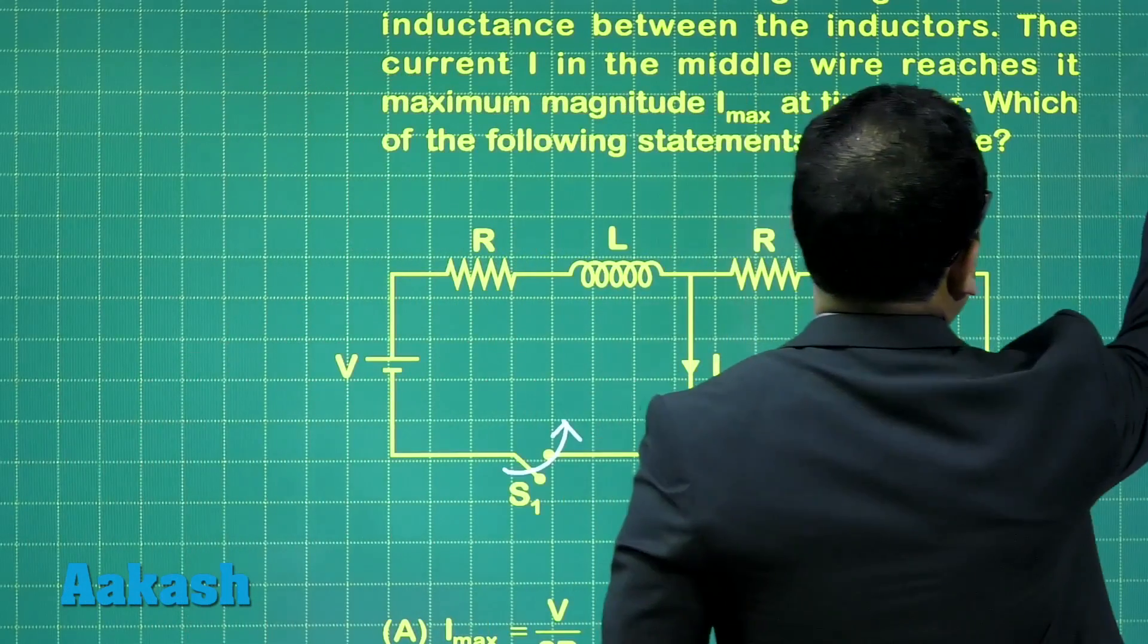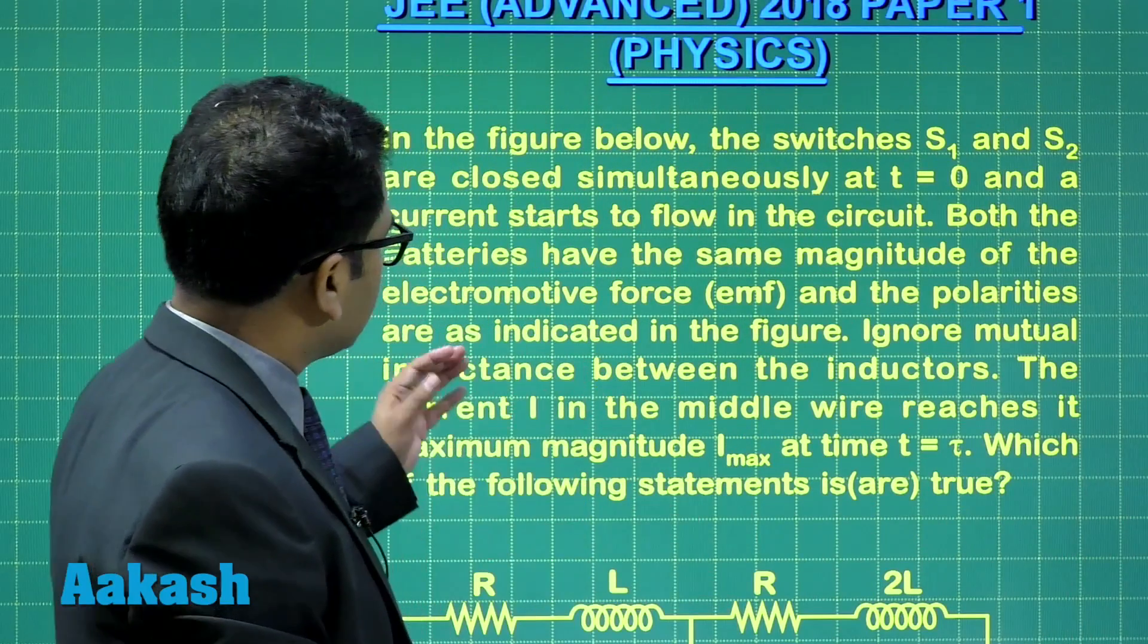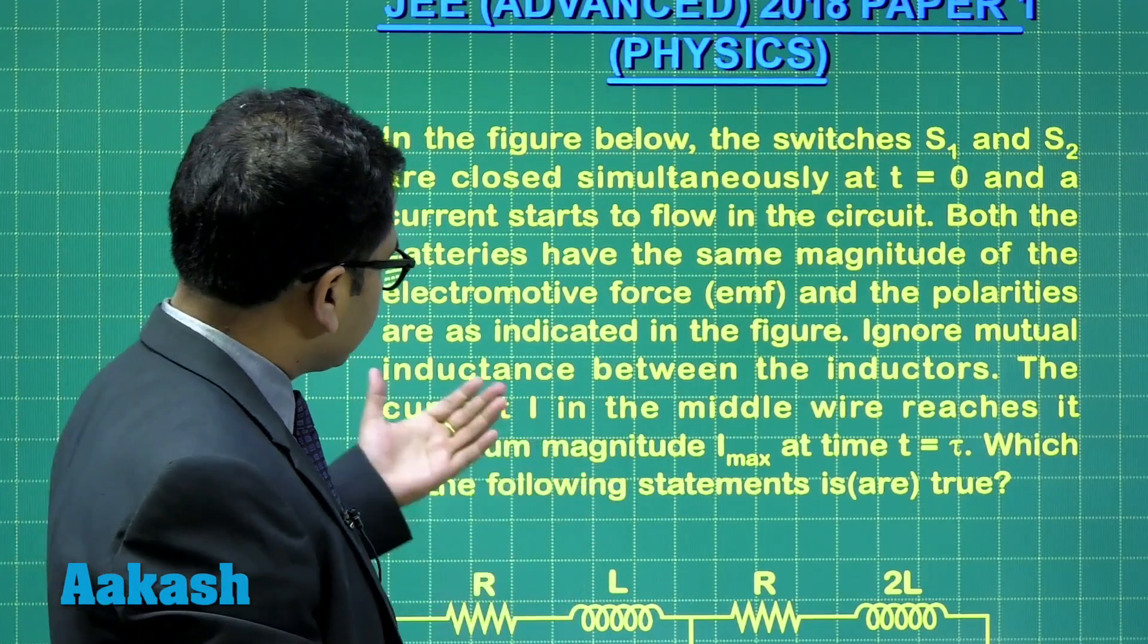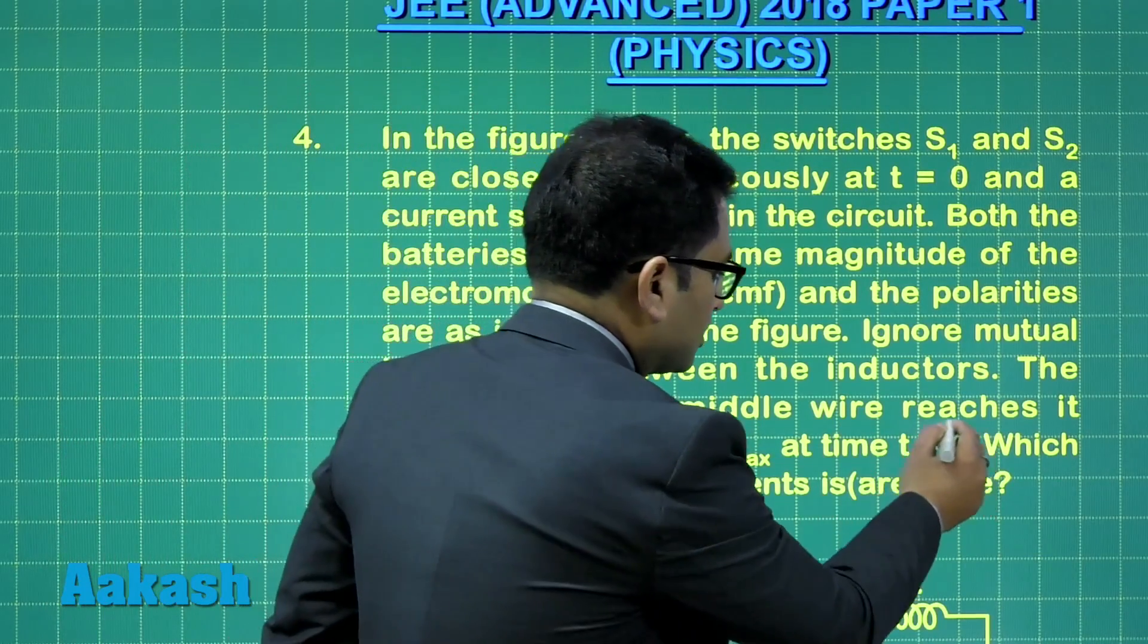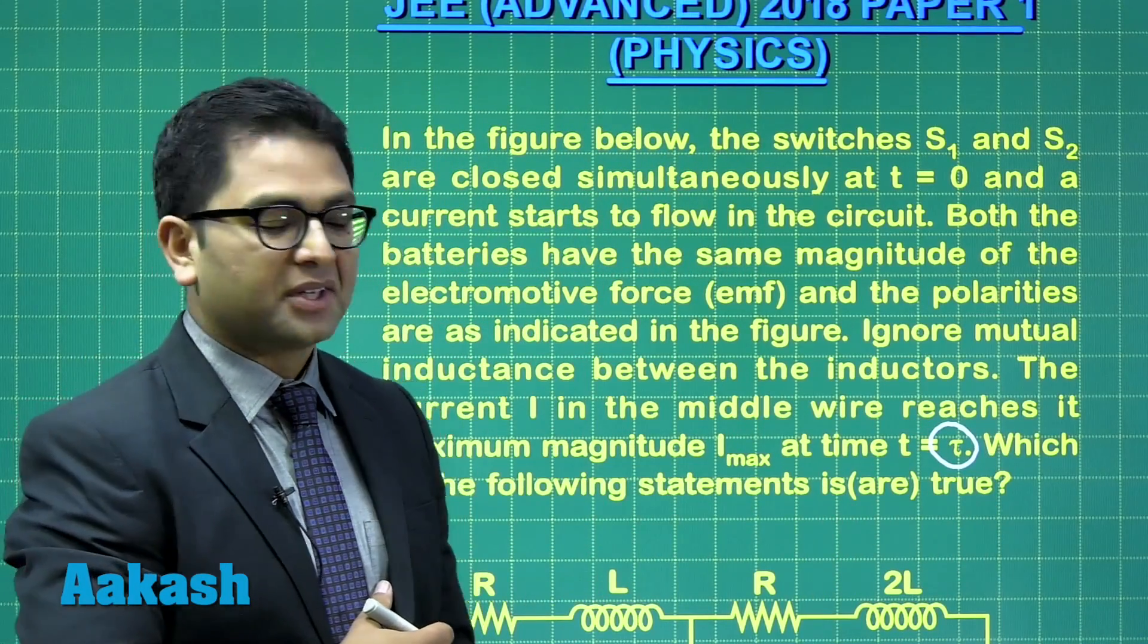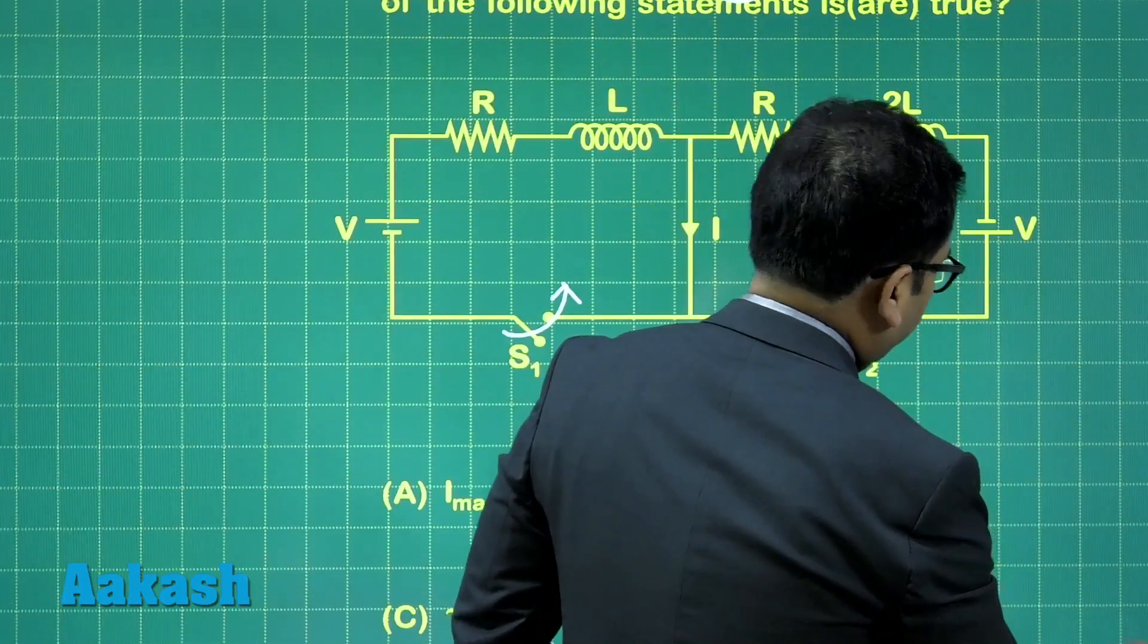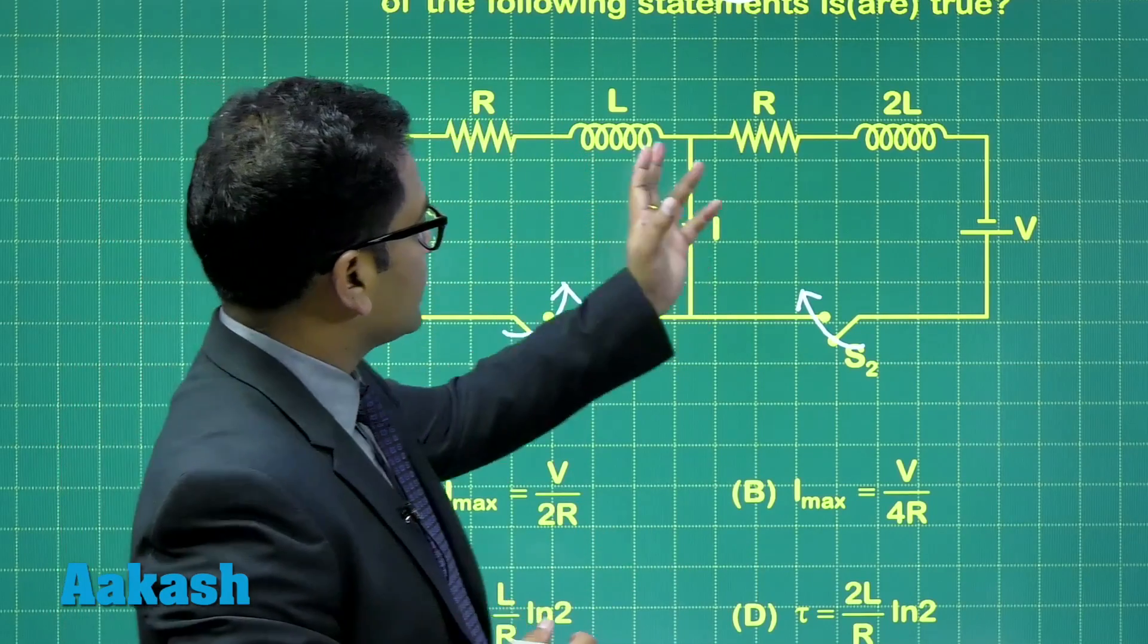Let's go with the statement of the question. It says ignore the mutual inductance between the inductors. The current I in the middle wire reaches its maximum magnitude I max at time T equals tau. So tau is that time when the current in the middle wire is maximum. You need to calculate that time and the I max, which is the maximum current.